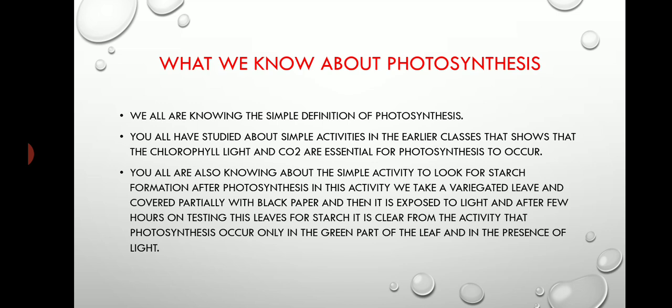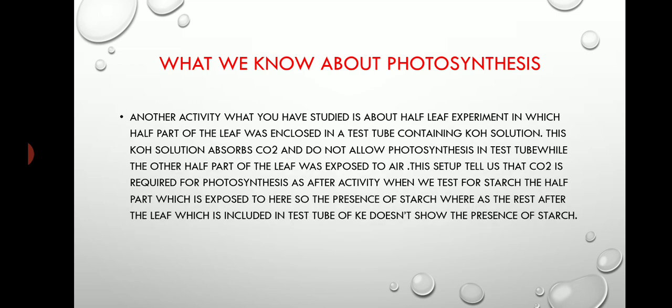In that activity, we cover part of a leaf with black paper and then expose the plant to light for a few hours. After that we pluck the leaf, remove the black paper, and test the leaf for starch. The starch test shows green patches only — meaning photosynthesis occurs only in the green part of the leaf, where chlorophyll is present.